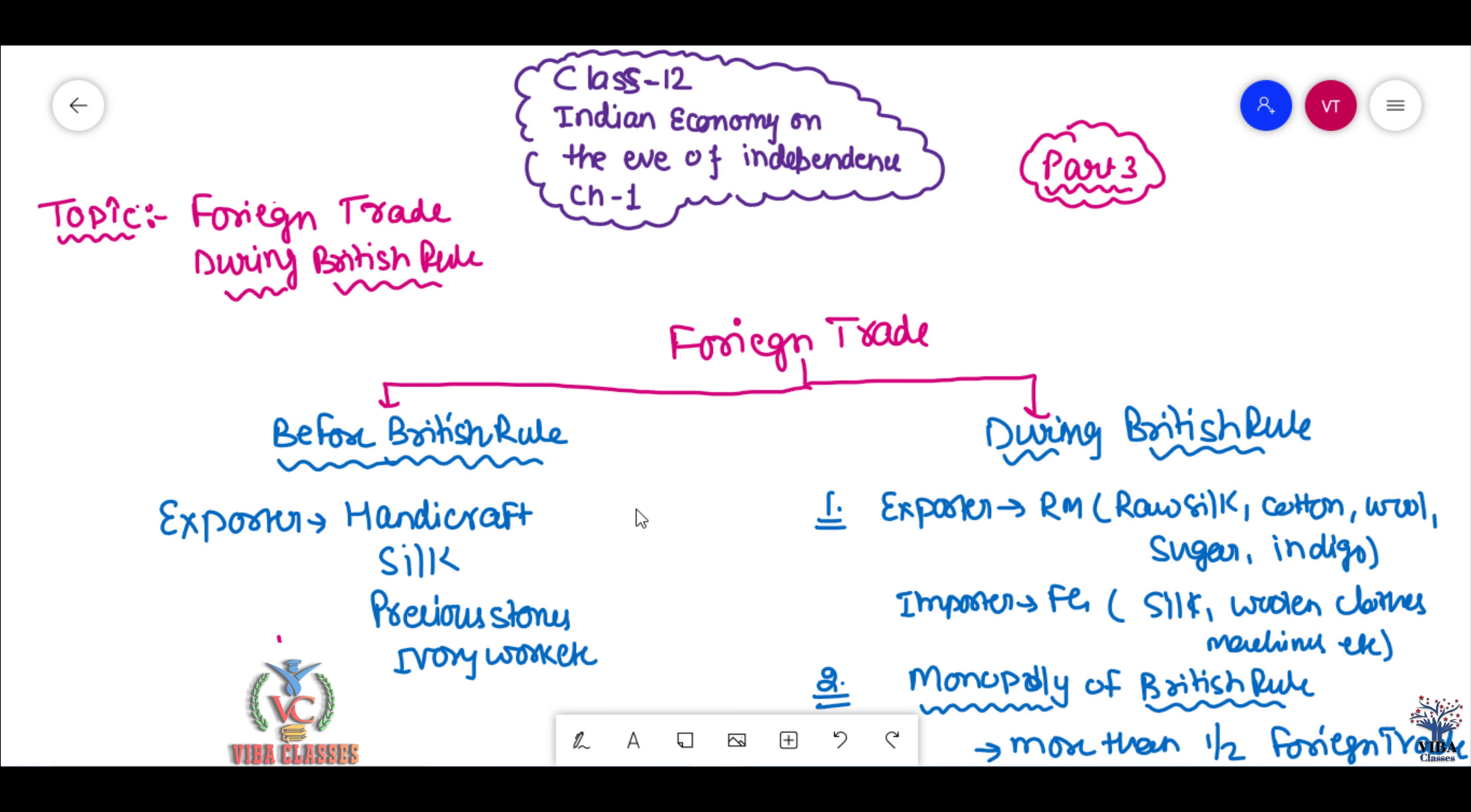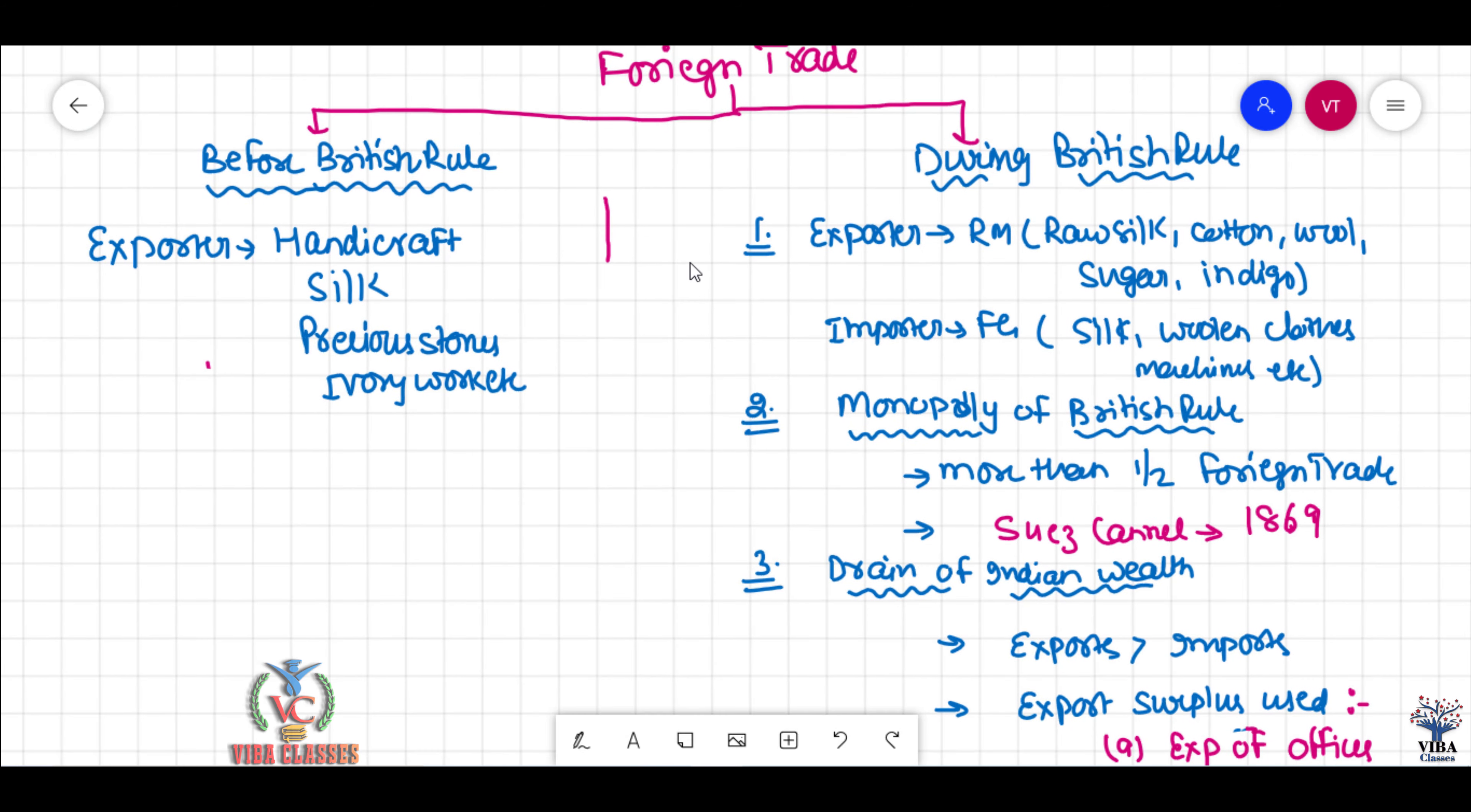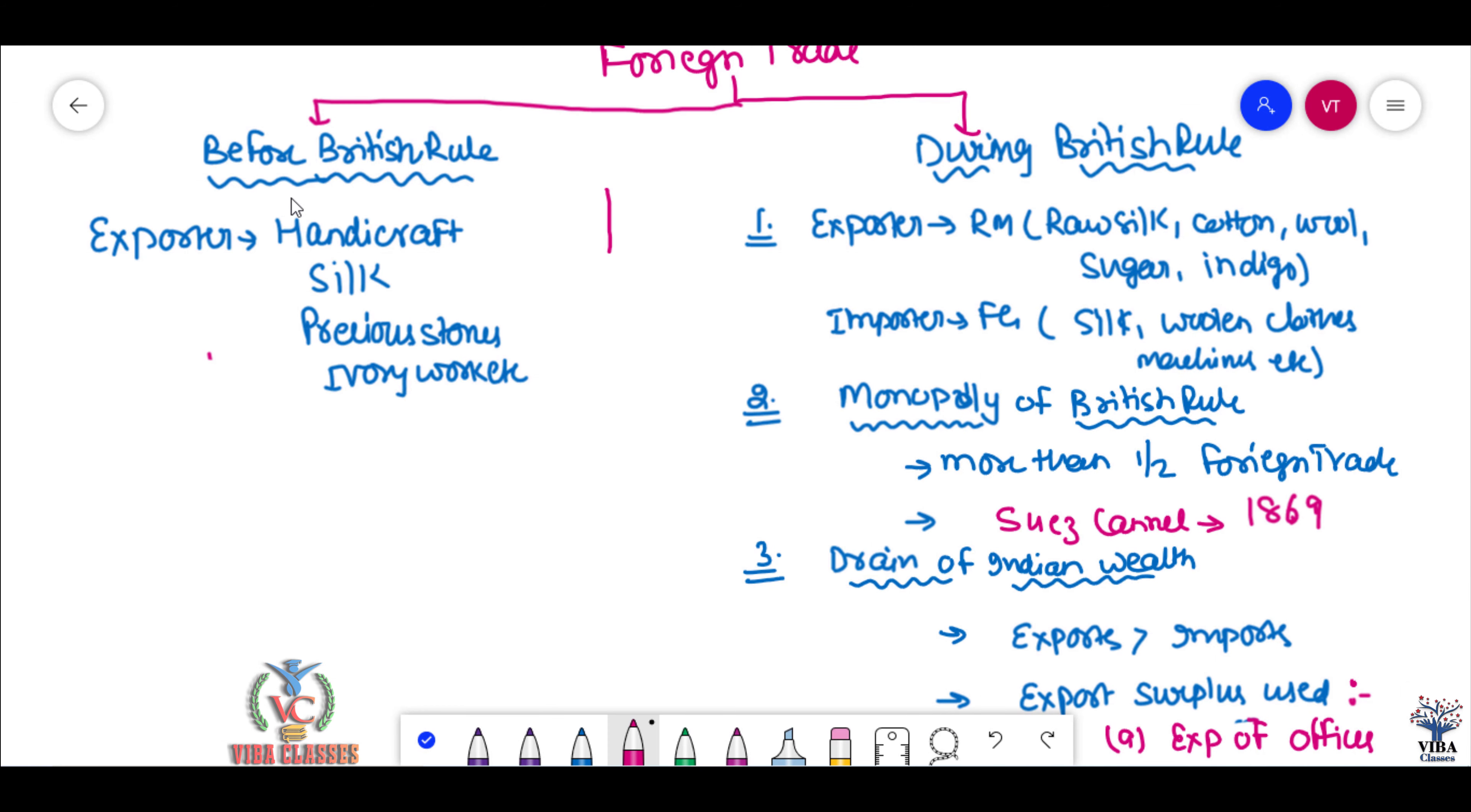You know that we have already discussed the agriculture sector and industrial sector. Today we will discuss the foreign trade during the British rule. It is obvious that there was a lot of exploitation. Foreign trade means export and import. We are the importer of finished goods and exporter of raw materials. We are going to take a comparison so that we can see what our conditions were before. If we talk about before the British rule, we had foreign trade. Our prosperous economy was not bad. Our country was not bad.